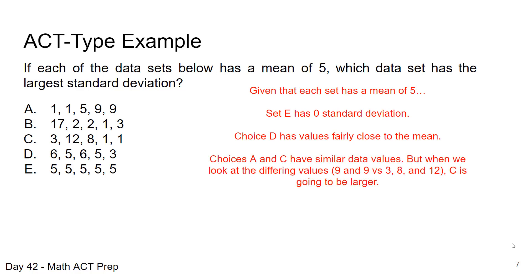Now let's take a look at choices A and C. A and C have some similar data values, some of the same data values. So when I look at A and C, they both have two data values that are 1. So we can almost think about eliminating those.